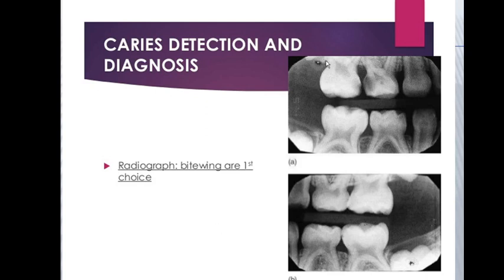Caries detection and diagnosis is very important. Interproximal caries are especially difficult to diagnose clinically. There are two ways: clinically, using a probe — if there is catching, this indicates interproximal caries. If it is difficult to detect clinically after many attempts, the solution is to take a bitewing radiograph. On the bitewing, you can easily see the radiolucency indicating caries on the proximal side of the tooth.